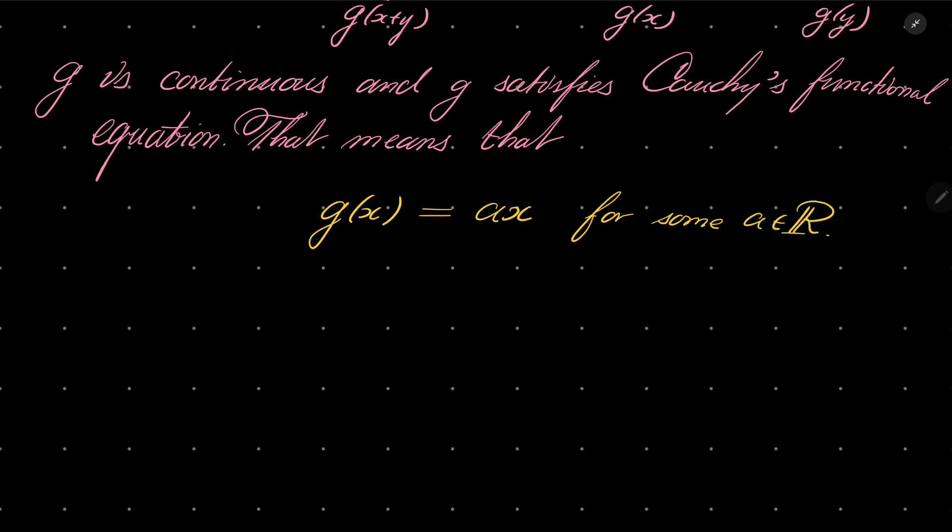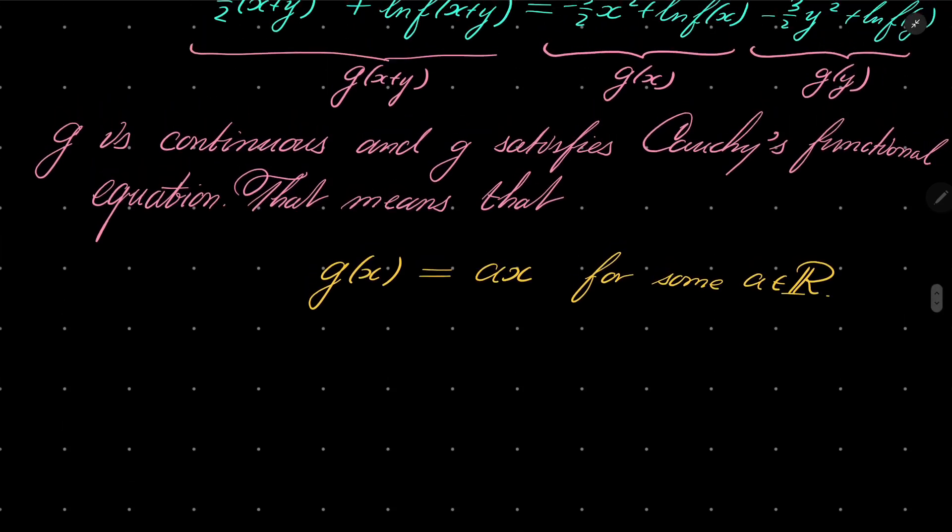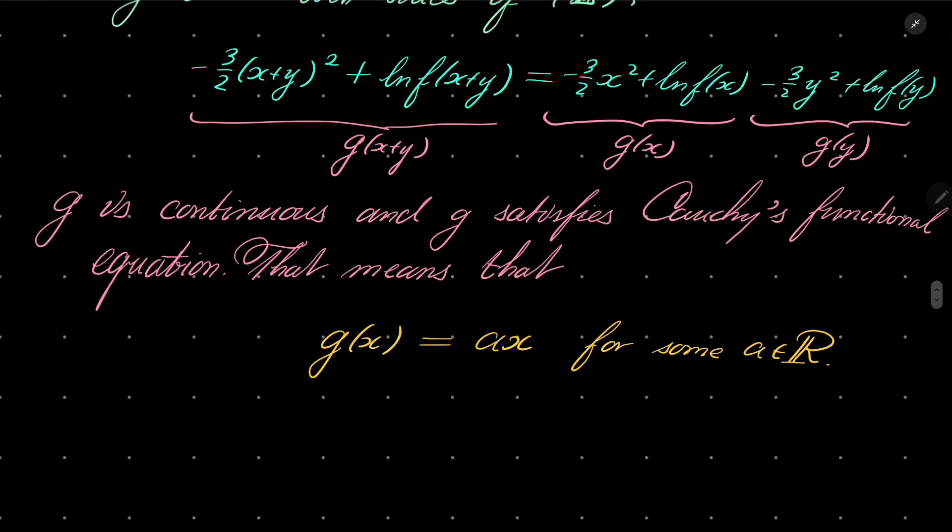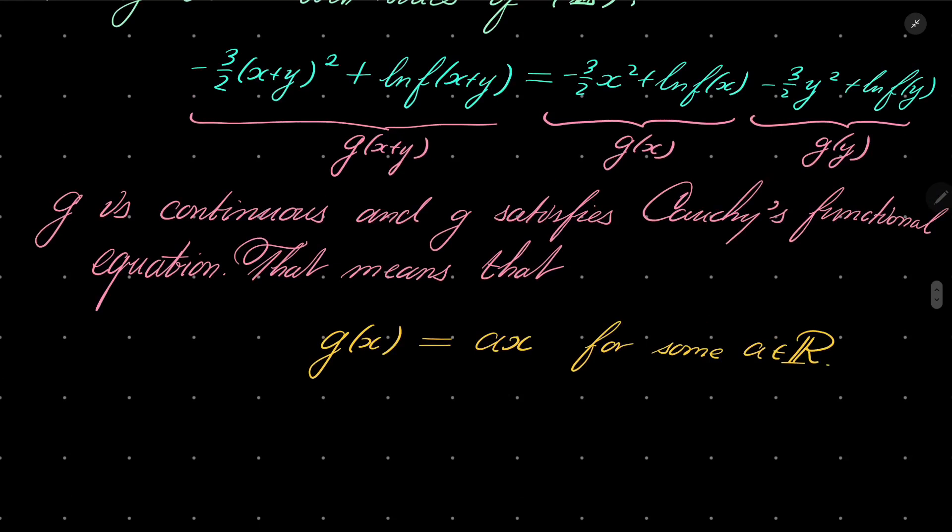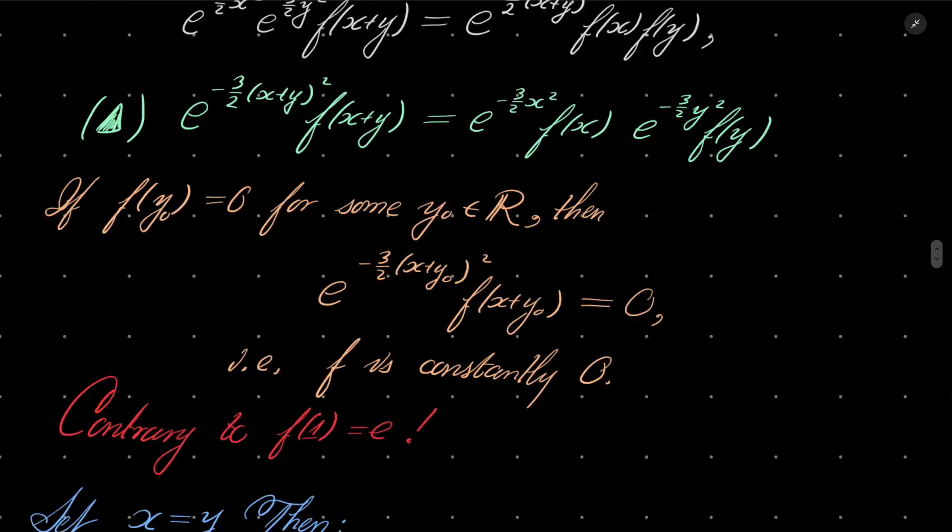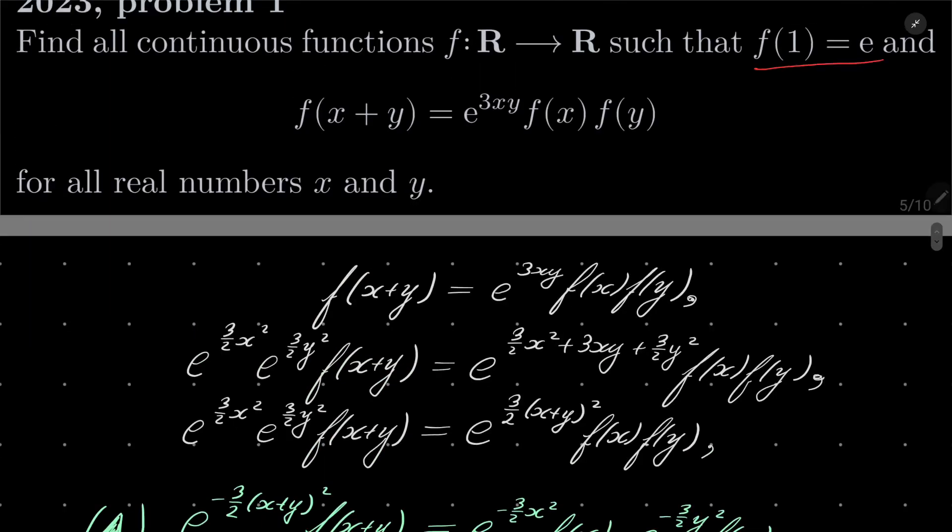And now, let's go back with our substitution. Remember that g(x), it was defined minus 3 over 2x squared plus natural log of f(x) equals ax. What is a? Can a be found? Yes, it can, because once again, let's go back to the beginning. We know that f(1) equals e. So now let's set x to be 1.